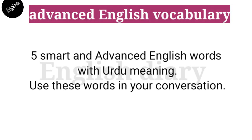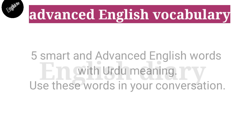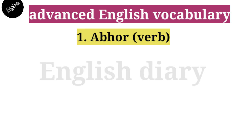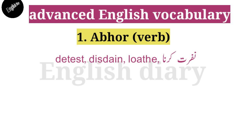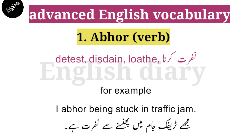Five advanced English vocabulary words with Urdu meaning and sentences. Let's see what these words are and how we can use them in our conversation. Number one is 'abhor.' Abhor is a verb and its past form is 'abhorred.' In continuous tense we say 'abhorring.' Its meaning is nafrat karna, that is to detest, to hate. You can use 'abhor' in place of 'hate.' For example: I abhor being stuck in a traffic jam.